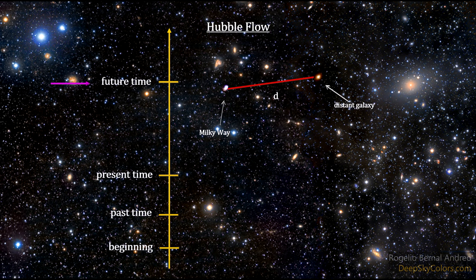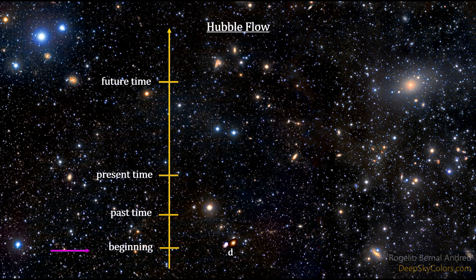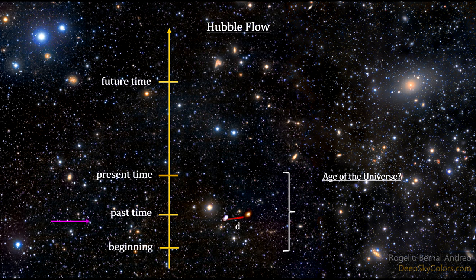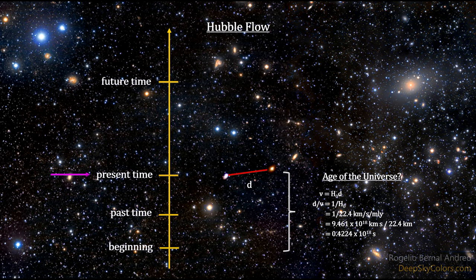This Hubble flow, where galaxies are getting further away with time, also implies that in the past they were closer together. It follows that we can ask how long would it take a galaxy to reach its current distance from us, given its current velocity. That's simply the distance divided by the velocity, or 1 over the Hubble constant, 13.4 billion years. That's the age of the universe.